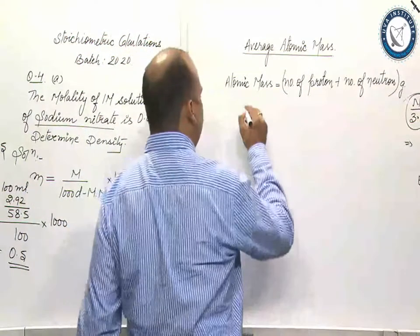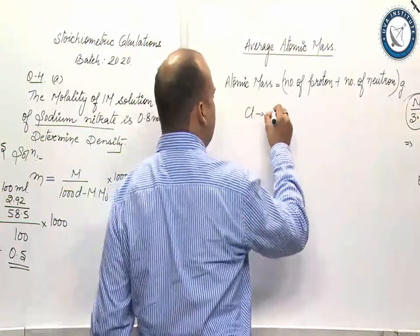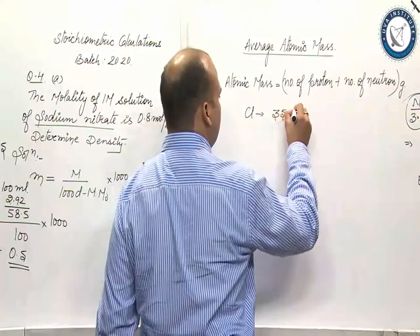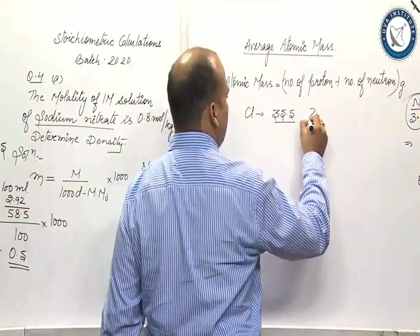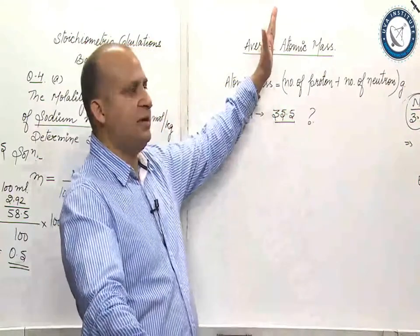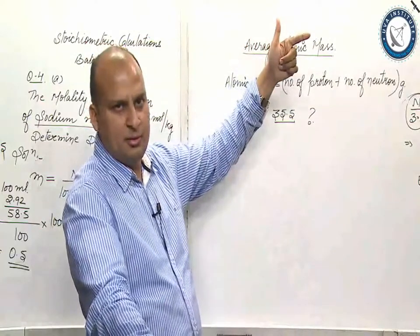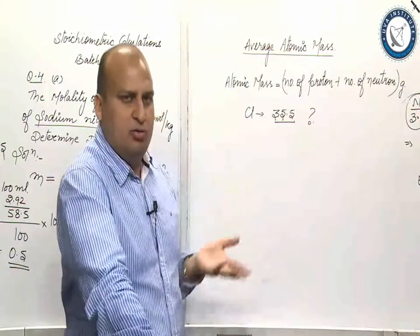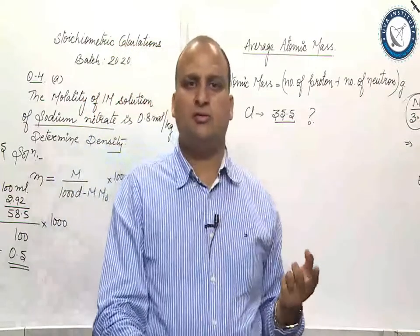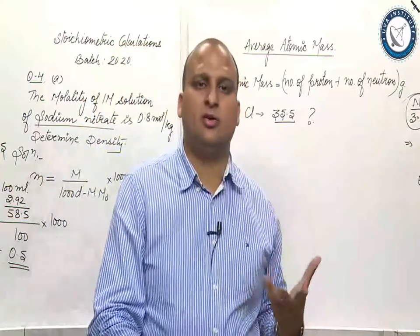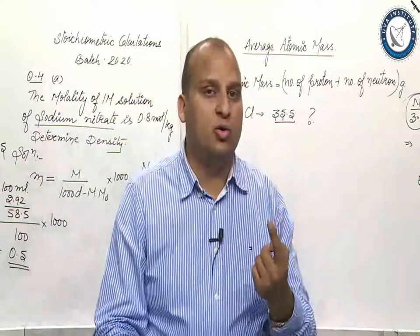So, if I talk about chlorine, the mass is 35.5. When we are talking about atomic mass, we are not talking about the mass of one atom, we are talking about the mass of one mole of atoms.